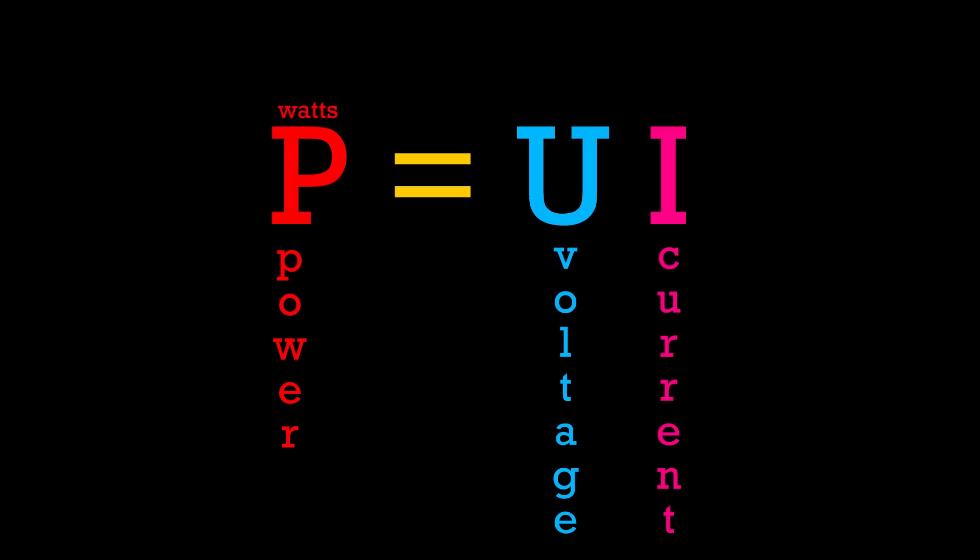Power is measured in watts, voltage is measured in volts, and current is measured in amps. This means we can say the formula like this: watts equal volts times amps.